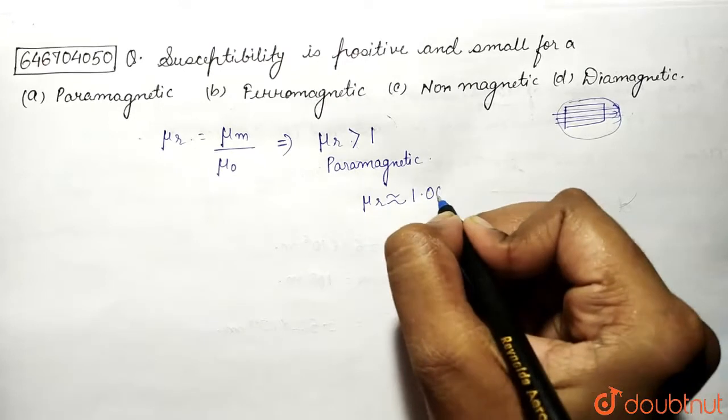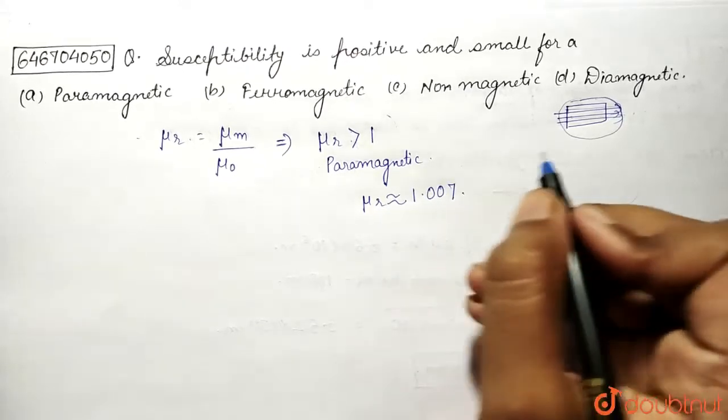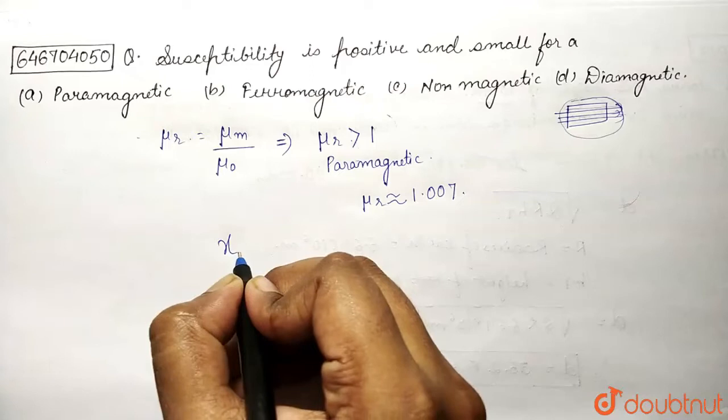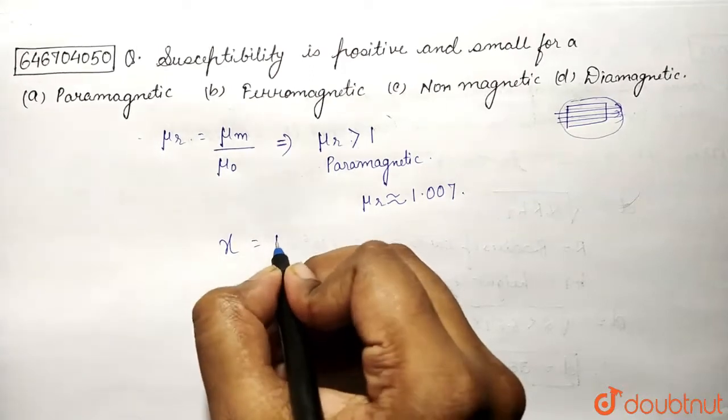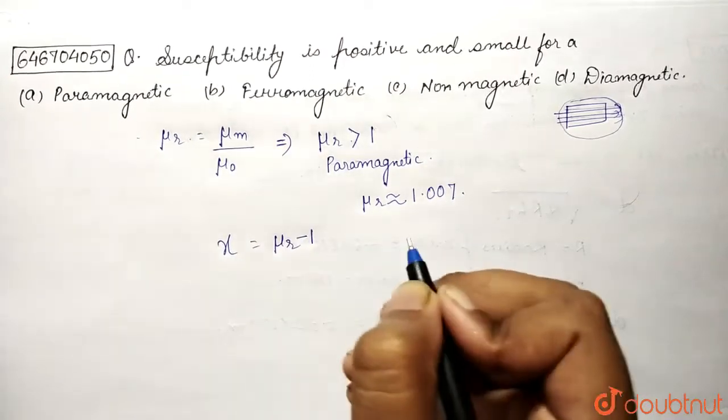to 1.007. Okay, now susceptibility has the relation with permeability, that is χ = μr - 1, that is